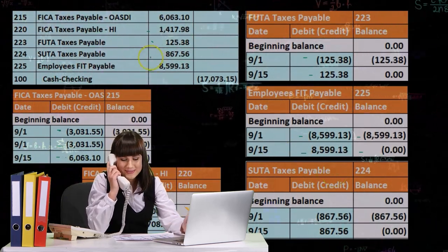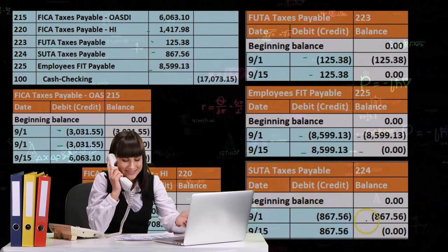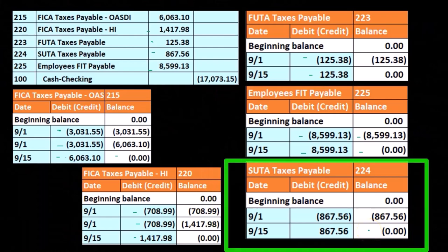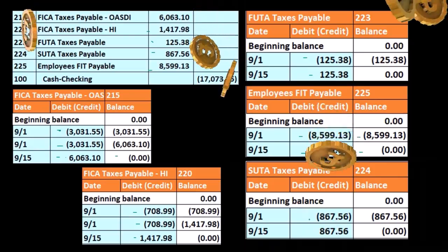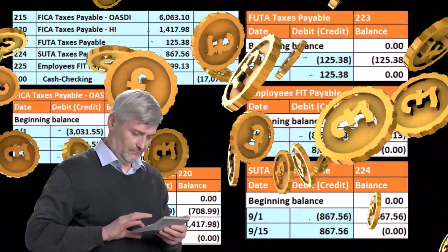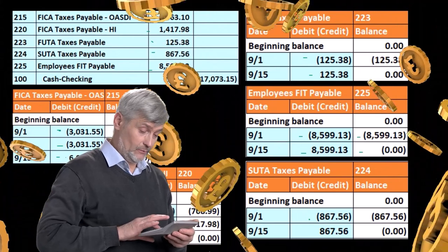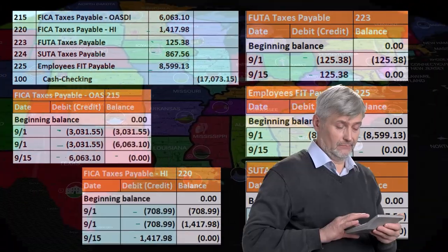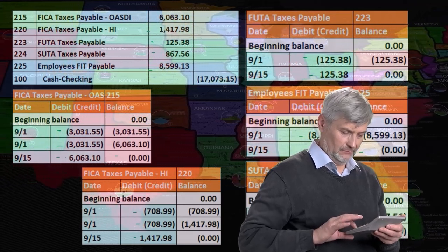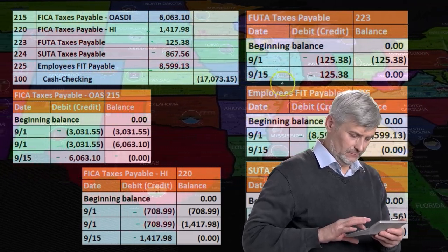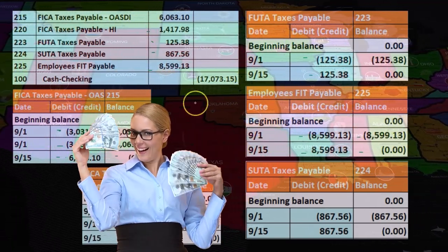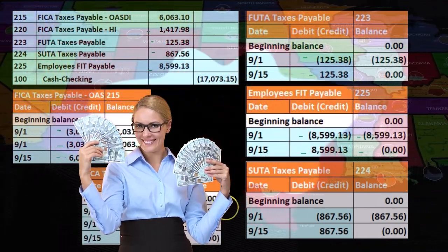Then we have SUTA, the state unemployment tax. It was at $867.56 and we brought it down to zero, paying off the SUTA. In our problem it's typically only an employer tax, though it could have an employee portion depending on the state. SUTA will often mirror FUTA in the way it's constructed, depending on the state.